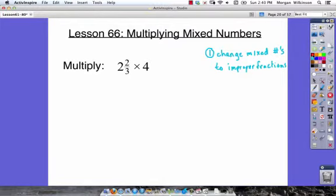If we look at this problem, we're going to change mixed numbers to improper fractions. Step one, we need to change 2 and 2 thirds to an improper fraction. We're going to multiply 3 times 2. Well, 3 times 2 is 6, plus 2 more is 8, so we get 8 over 3.